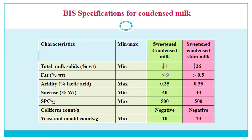The BIS specification for condensed milk: for sweetened condensed milk and sweetened condensed skim milk, total milk solids minimum 31% and 26% respectively; fat minimum 9% and maximum 0.5%; acidity maximum 0.35% in both cases; sucrose 40% in both cases; standard plate count per gram maximum 500 in both cases; coliform count negative in both; yeast and mold count maximum 10 per gram.